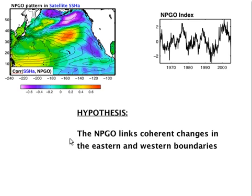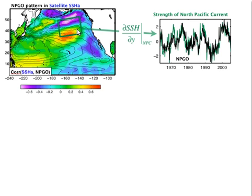Now let's go forward. Here again is the NPGO index. Let's test the hypothesis that the NPGO links coherent changes in the eastern and western boundaries. Going back to the definition of the NPGO — that it modulates the strength of the gyre-scale circulation — if we take an index of the average sea surface height gradient across the North Pacific Current region (the green box), we find that this gradient index is very well correlated with the NPGO, as expected.